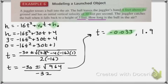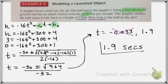Now, would it make sense to have a negative amount of time? No. So in this case, this answer is not what we will use. However, 1.9 is a perfectly reasonable answer. So our answer would be 1.9 seconds.